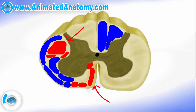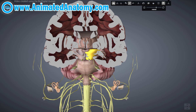We also had the extrapyramidal tracts — the reticulospinal tracts and the olivospinal tract. You can tell by their names that they originate from nuclei in the midbrain. If you don't know these nuclei, you should check out my video about the midbrain where I explain and illustrate it.